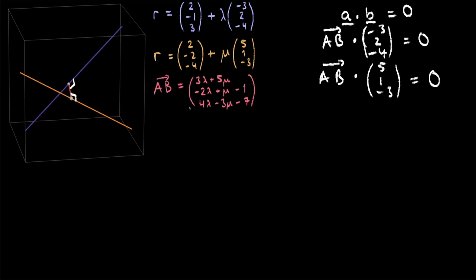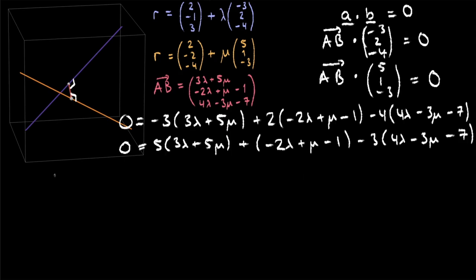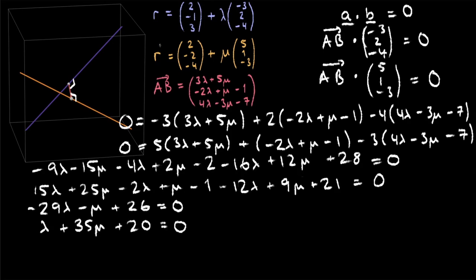So to do the dot product, you have to do the top times the top, the middle times the middle, and the bottom times the bottom. We'll do that for each of these here, and we end up with two big long equations. With these two equations, we're going to have to expand them out and then simplify them. We end up with minus 29 lambda minus mu plus 26 equals 0, and lambda plus 35 mu plus 20 equals 0.